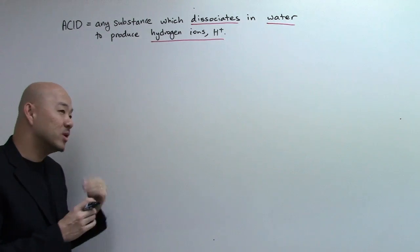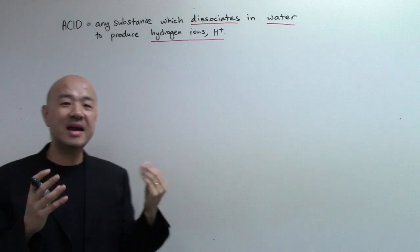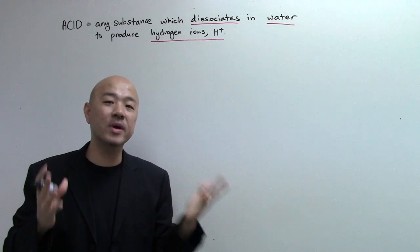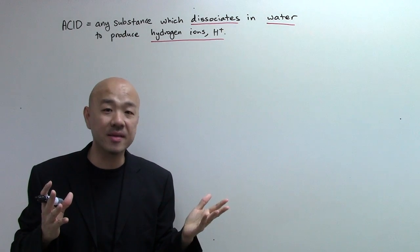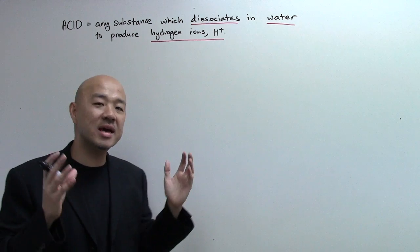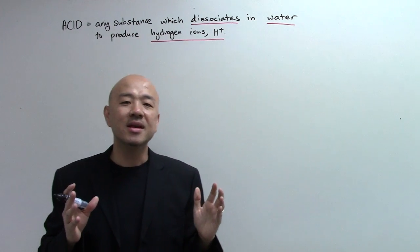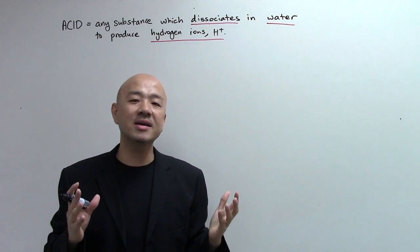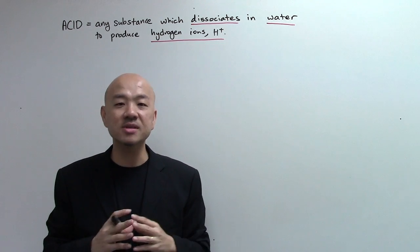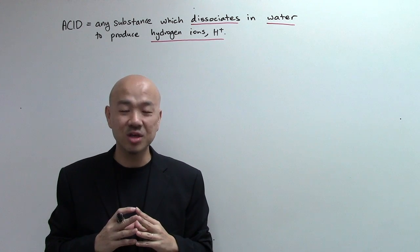Now we look at how to classify acids. There are two ways to classify them. The first way is known as the strength of acid, which refers to the extent of dissociation or ionization.